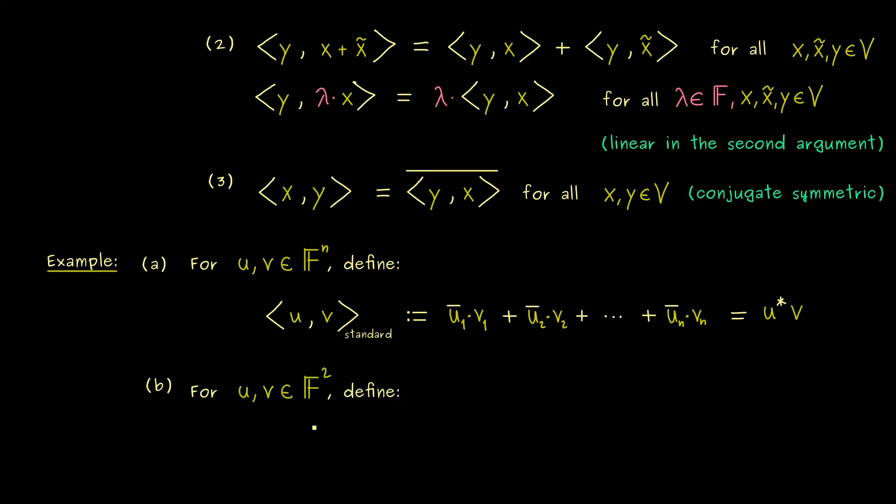But first, let's look at another example in F^2. There we only have two components, so everything is a little bit simpler. And here we could say, in the definition, we mix up the components. So u_1 is combined with v_2 and u_2 is combined with v_1. Hence, we immediately see, that the second and the third property are fulfilled. More concretely, the linearity and the conjugate symmetric property you can show as for the standard inner product. So this is not hard at all.